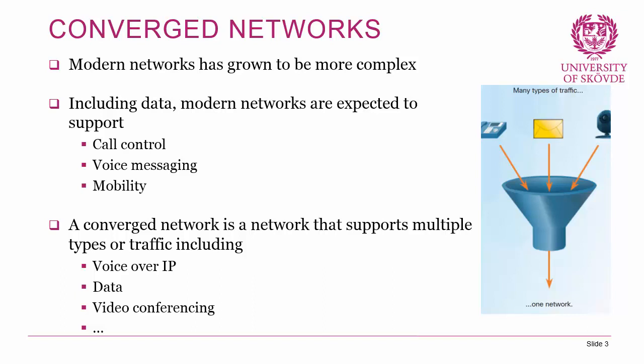We already talked about converged networks in terms of routing — when all routers are aware of the same routes using a dynamic routing protocol. But you can also talk about converged networks in terms of what type of traffic the network can manage. Modern networks have grown to be much more complex. In the traditional sense, you built a network to house data traffic — email, surfing the Internet, stuff like that.